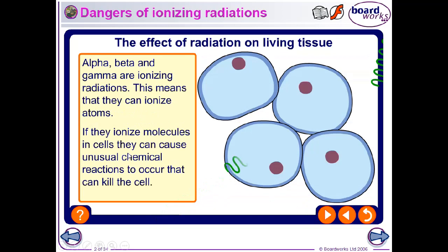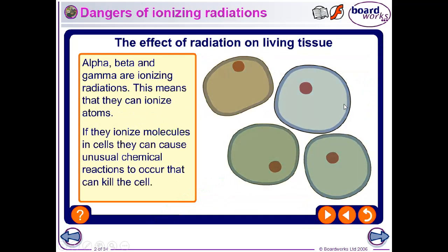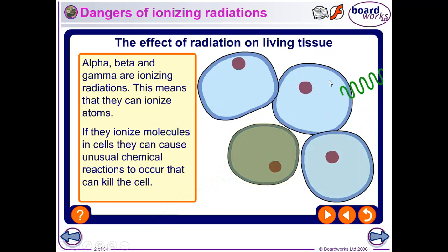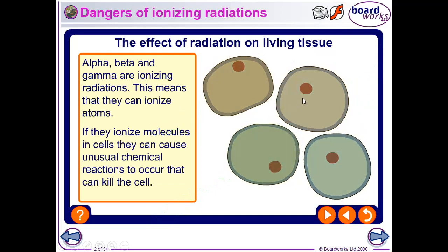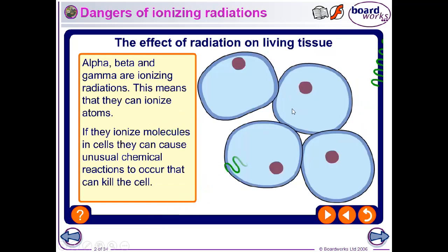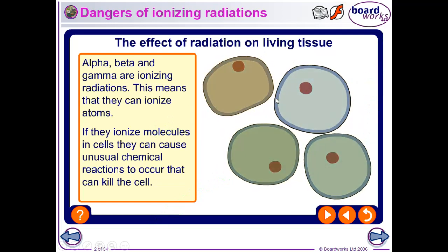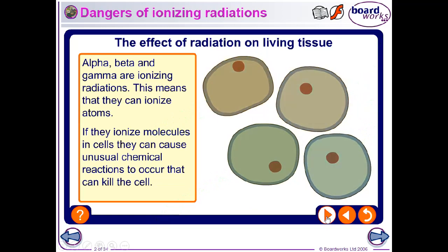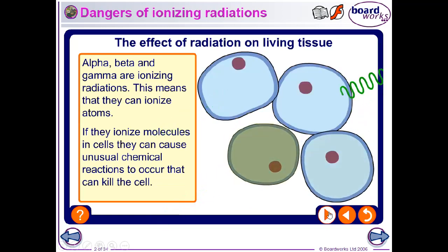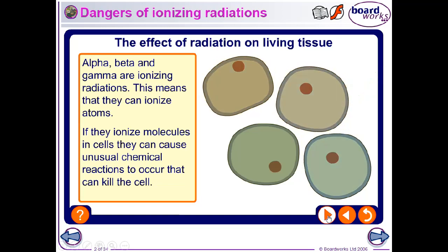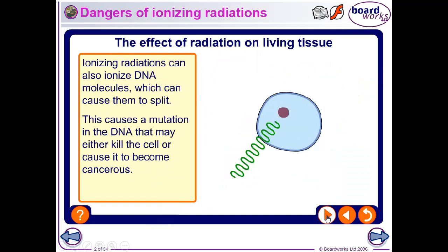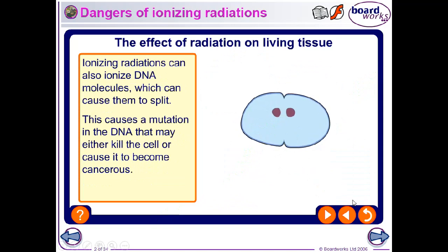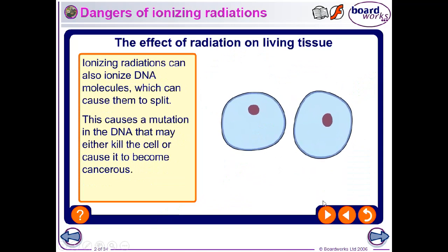If ionizing radiation ionizes atoms that are inside living cells, it can disrupt the chemical reactions that happen in the cell and kill the cells. It can also damage the DNA of the cell, which can lead to problems with the cell reproducing later on.